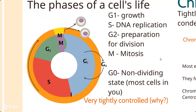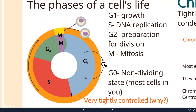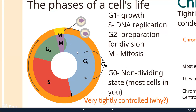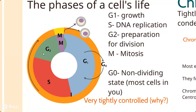The cell cycle is the entire sequence from just having divided until dividing again. There are two main phases: interphase and mitosis. Interphase is represented by the large orange section - the bulk of a cell's existence is spent in interphase. Only a very short time is spent in mitosis. We're talking about eukaryotic cells here. Interphase is subdivided into three phases: G1, S, and G2.